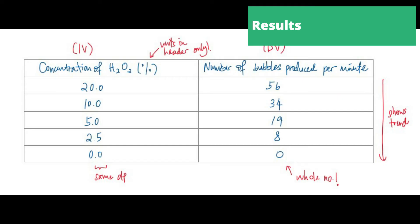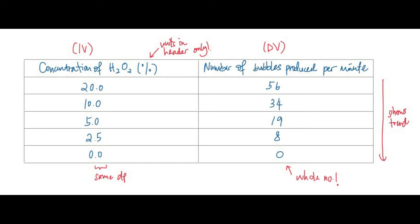This is what the results table should look like. Make sure that your formatting is correct, same decimal places, units in the header only, and number of bubbles produced per minute should always be in the whole number.